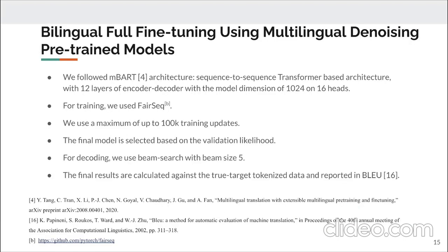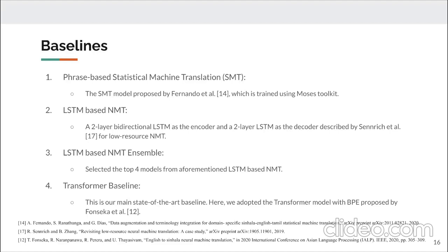We followed the MBART architecture — a sequence-to-sequence transformer-based model with 12 layers of encoder and decoder. For training, we used the fairseq tool, trained up to 100,000 updates, and selected the final model based on validation likelihood. We consider four baselines: phrase-based statistical MT trained using Moses toolkit; LSTM-based NMT with two-layer bidirectional LSTM encoder and two-layer LSTM decoder; an LSTM-based ensemble model using the top 4 checkpoints; and a transformer baseline with BPE encoding proposed by Fonseka.